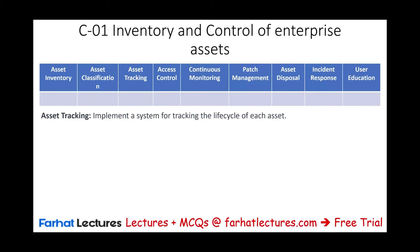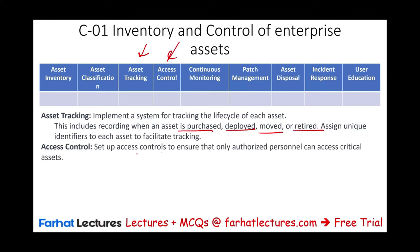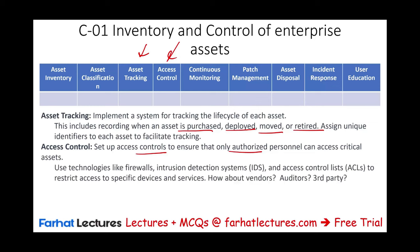You also need asset tracking — tracking the life cycle of each asset, including recording when it is purchased, deployed, moved, or retired, and assigning a unique identifier to facilitate tracking. Access control is also important: only authorized personnel should access assets, especially critical ones. Use technologies like firewalls, intrusion detection systems, and access control lists to restrict access to specific devices and services. Keep in mind that vendors, auditors, and other third parties may also need access, so plan accordingly.